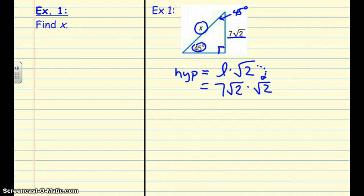From here, we can simplify. We know that square root of 2 times square root of 2 is just 2. So we get 7 times 2 equals 14. The length of x is equal to 14.